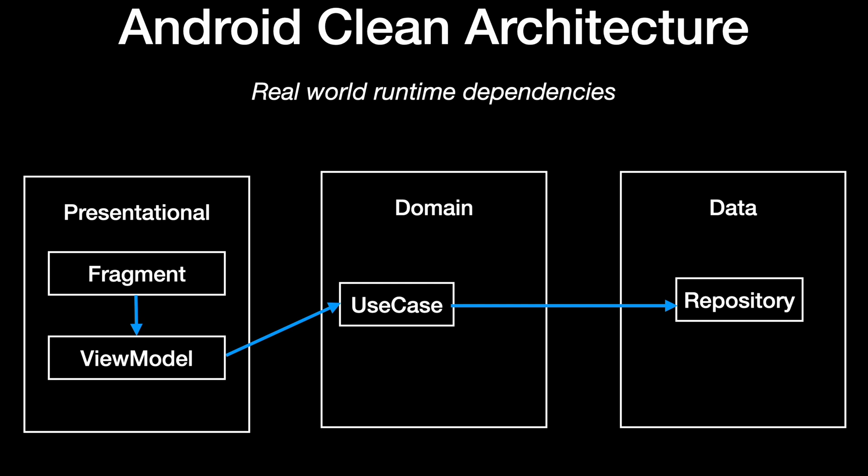The repository is responsible for accessing the network, the local database, or any other data source to actually bring the raw data. It does not perform any logic on the data. As you can see, the runtime flow — shown in blue — goes from presentation to domain and then from domain to data.